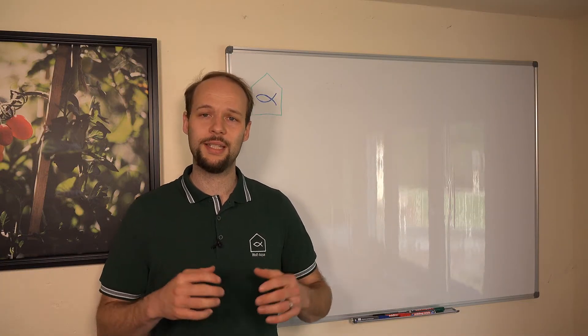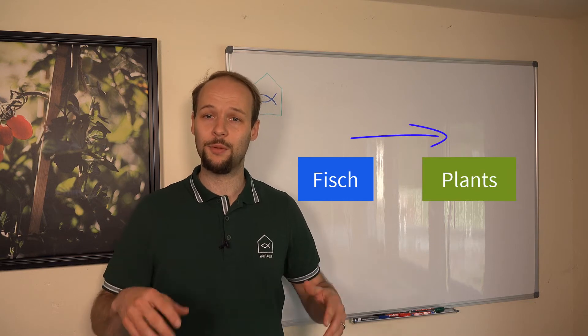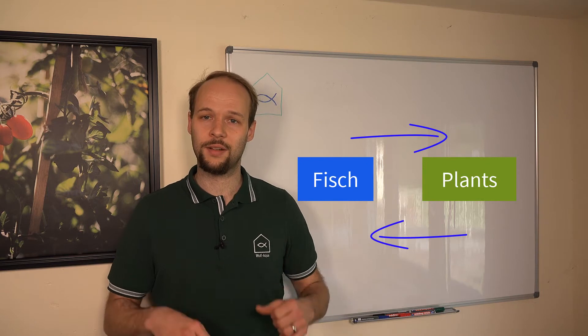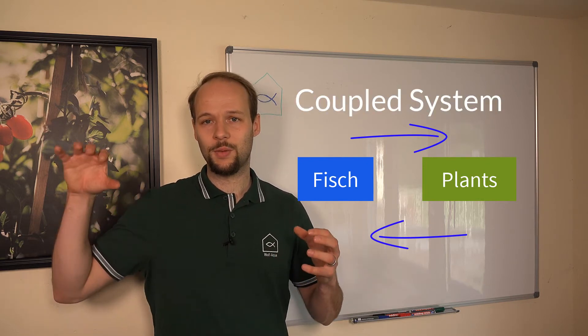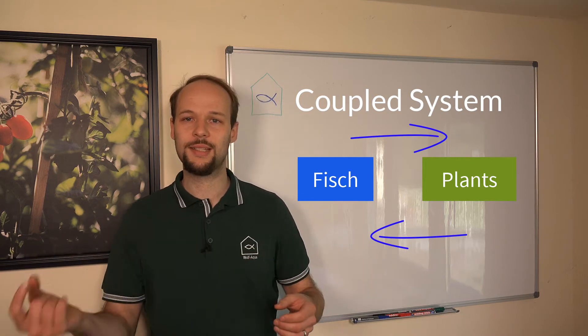In a classic aquaponics system, the main idea is that the water goes from the fish to the plants, the plants take up the nutrients, clean the water and the clean water goes back to the fish. And that is what is considered as a coupled aquaponics system. Because the fish production is coupled to the plant production and the water is flowing like in one big loop from the fish to the plants and back to the fish.